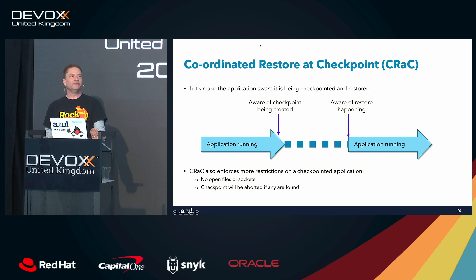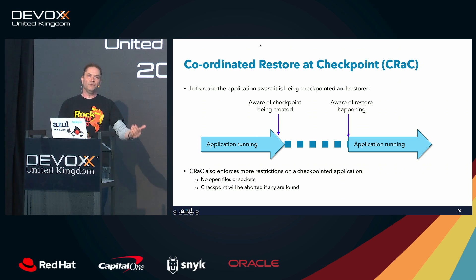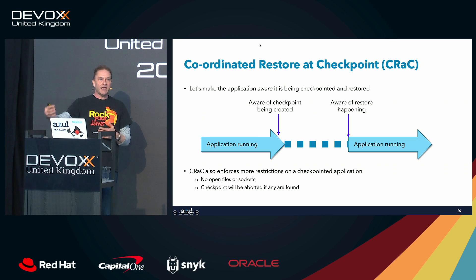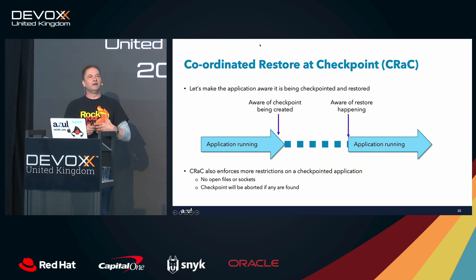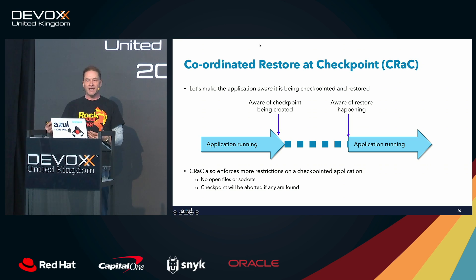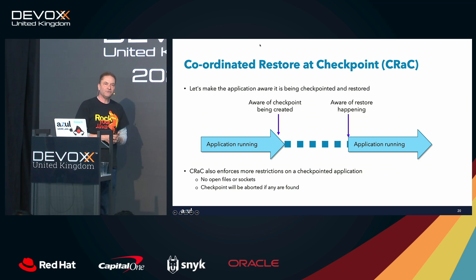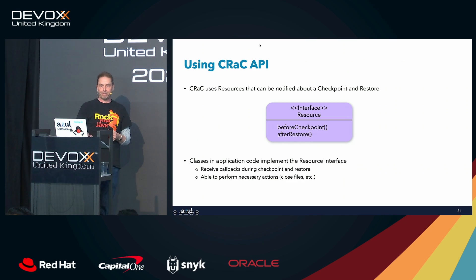CRAC enforces strict restrictions: no open files and no open network connections at checkpoint time. If you have an open file, you must close it before the checkpoint. If you have an open network connection, you must shut it down. When the application restarts, it's up to the application code to reopen files — even comparing checksums to detect changes — and re-establish network connections in a controlled way. If open files or connections exist at checkpoint time, CRAC will refuse to create the checkpoint.